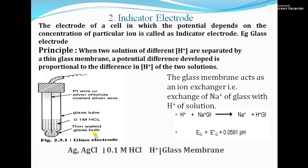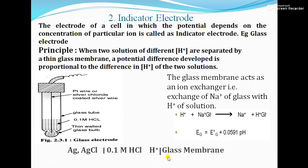The glass electrode consists of a thin-walled glass bulb, with 0.1 M HCl as the electrolyte inside, a glass tube, and a platinum wire. The reaction at the glass bulb involves an exchange of Na⁺ and H⁺: H⁺ from the solution gets exchanged with Na⁺ from the glass bulb, giving Na⁺ and HCl. The formula is: E_G = E⁰_G + 0.0591 × pH. The cell representation is: Ag | AgCl | 0.1 N HCl | H⁺ | glass membrane.